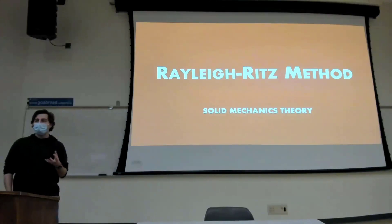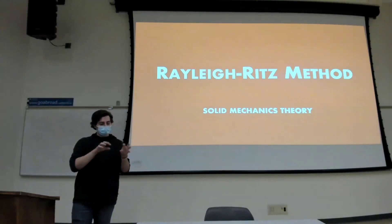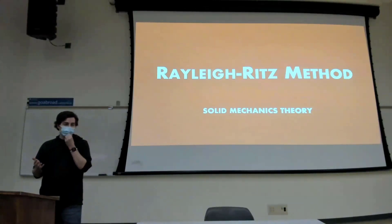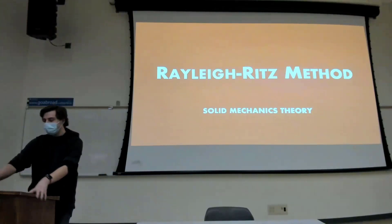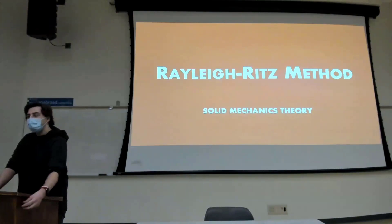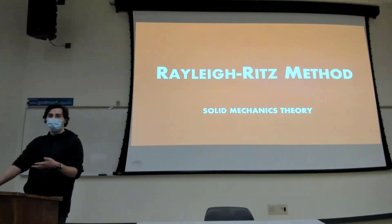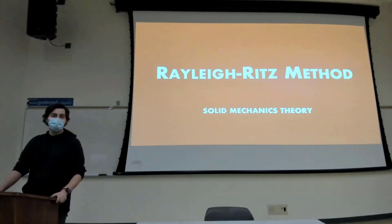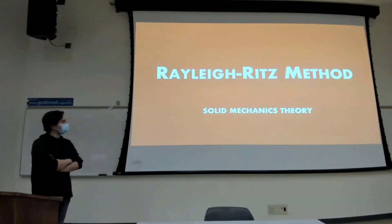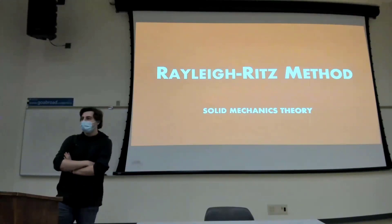The finite element method is a way where we take a very big problem and split it into a series of smaller problems — that's why it's called finite elements. We take a structure, like this podium, and break it into little pieces. Each one of those pieces is called an element and there's a finite number of them. We're going to talk about that next week and finish up today with the Rayleigh-Ritz method.